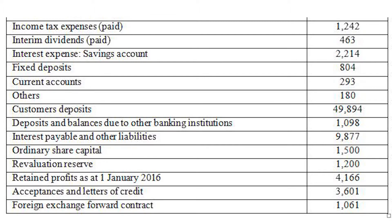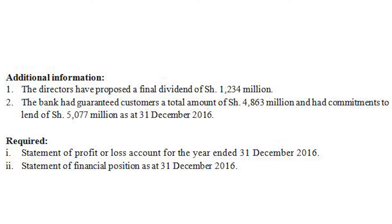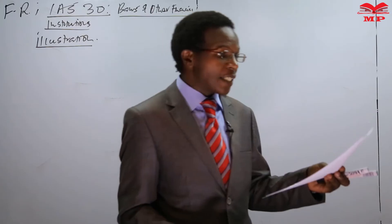Customer deposits are a liability. Deposits and balances due to other banking institutions are a liability. Interest payable and other liabilities are liabilities. Ownership capital is equity. Revaluation reserve is equity. Retained profits is equity. Acceptances and letters of credit and foreign exchange forward contracts are off-balance sheet items. The proposed final dividend and the bank's guarantees and commitments to lend are also off-balance sheet items.